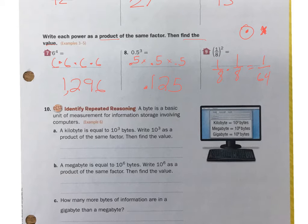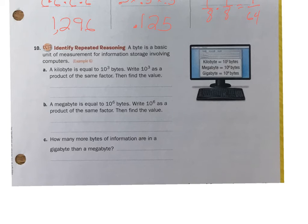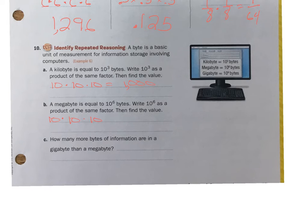Let's look at number 10. A kilobyte is equal to 10 to the 3rd power bytes. Write 10 to the 3rd as a product of the same factor and find the value: it would be 10 times 10 times 10, which equals 1,000. A megabyte is equal to 10 to the 6th power: 10 times 10 times 10 times 10 times 10 times 10. When you're multiplying by 10 it's really fun — since it's to the 6th power, you just put a 1 followed by 6 zeros, so it's 1 million.